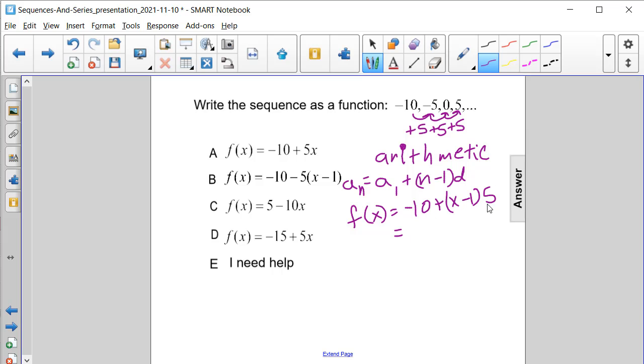Because so far I see a negative 10, but it says minus 5 times x minus 1, and that's not what's happening—we're adding it. So this one is definitely ruled out. And we're also not subtracting by 10 each time, so choice C is also ruled out. So let's simplify this by distributing the 5 through.